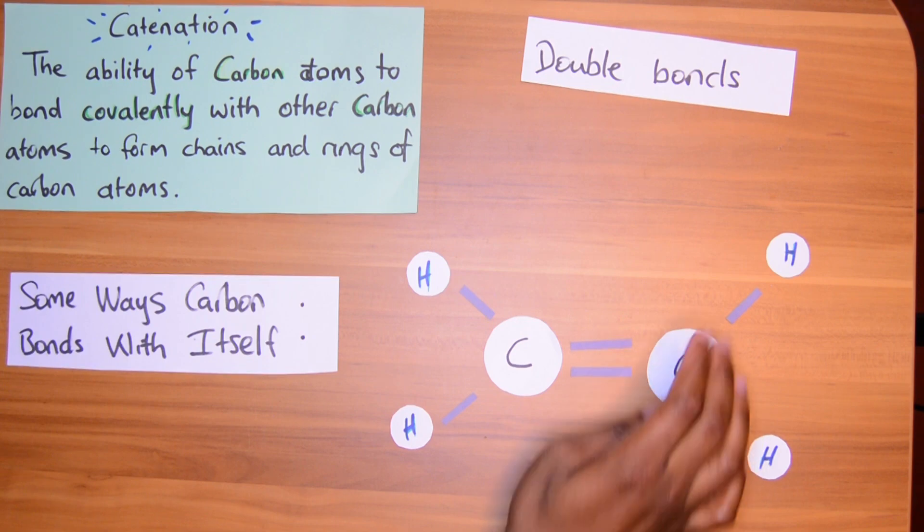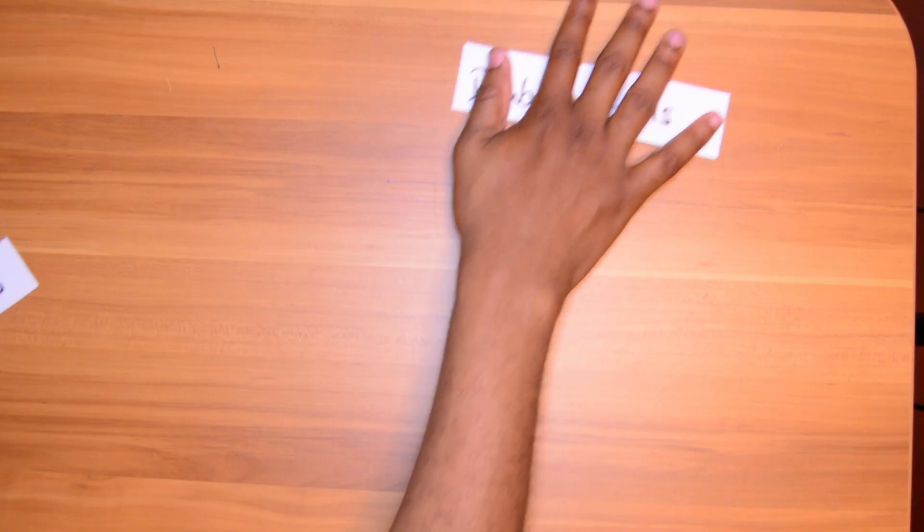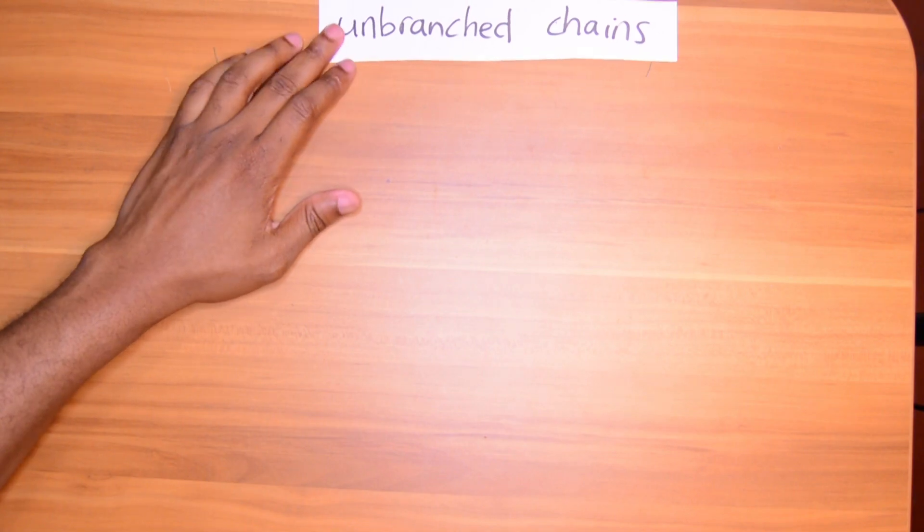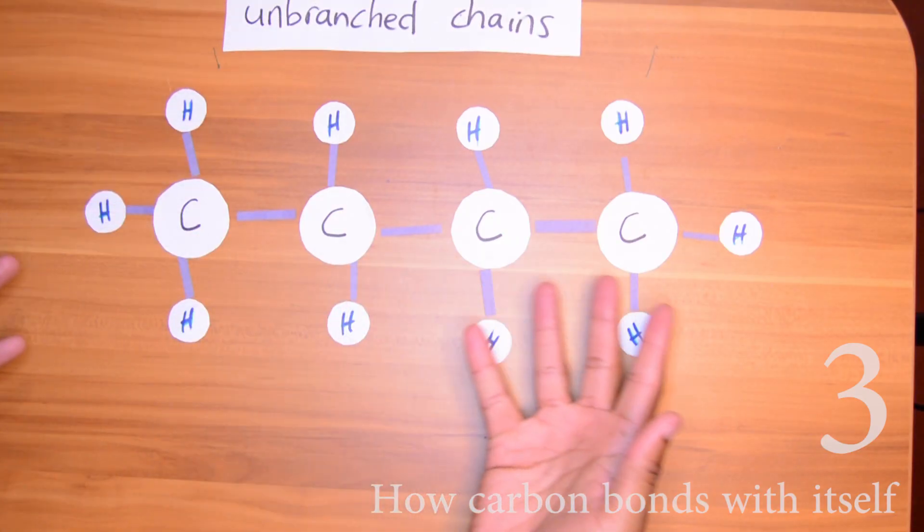And for this guy, one, two, three, four. We can have unbranched chains. Notice how the carbons are in a straight chain.